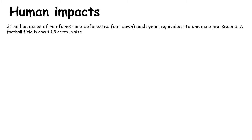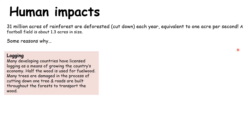The next section is human impacts — what are we doing to endanger the rainforest? 31 million acres of rainforest are cut down each year, equivalent to one acre per second. An acre of land is about the size of a football pitch — actually 1.3 acres — so we can see a massive amount of forest is being cut down each year.